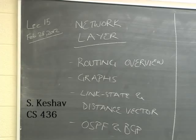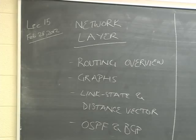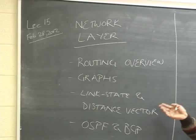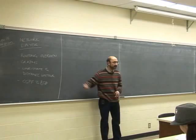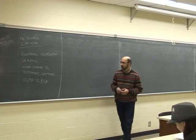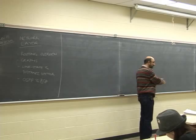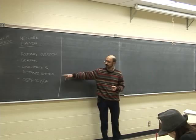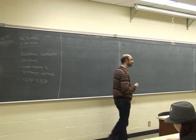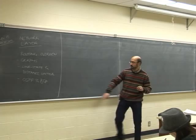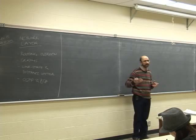We've been talking about the network layer, and today I'm going to discuss one of the most important services it provides: routing. I'll give an overview of what the Internet looks like at the nodes and edges — the graph abstraction layer. We'll talk about two routing algorithms: the link state algorithm and the distance vector algorithm. Then we'll look at OSPF, used inside a campus like Waterloo, and BGP, used to route across different networks.